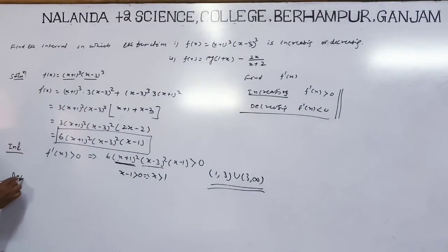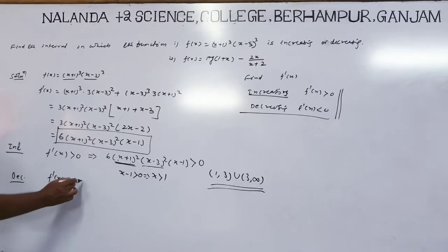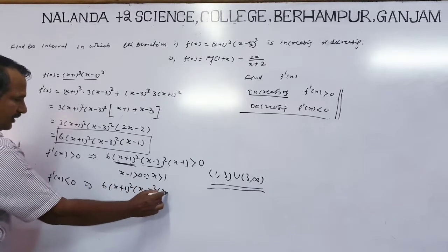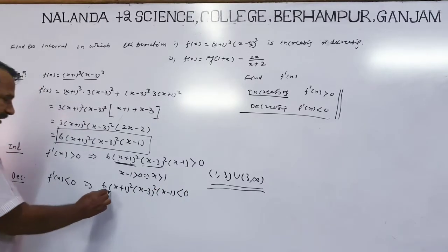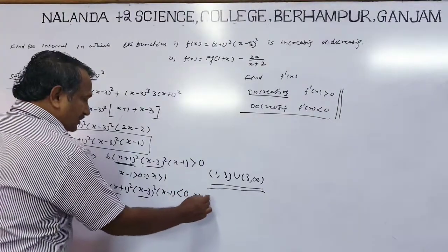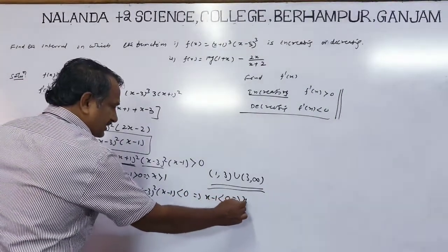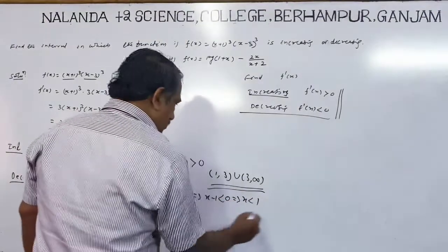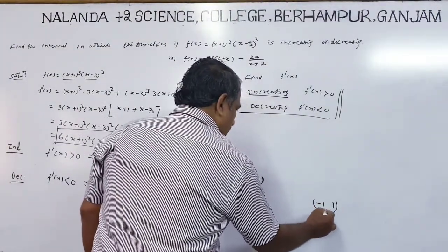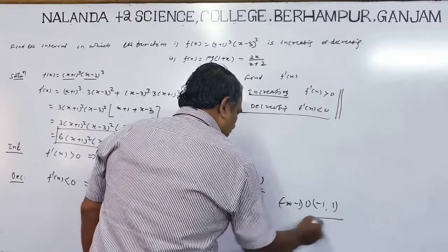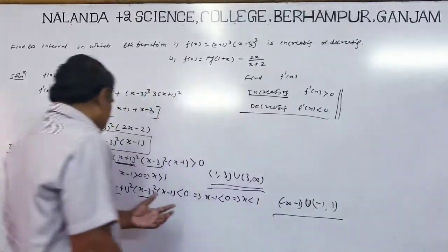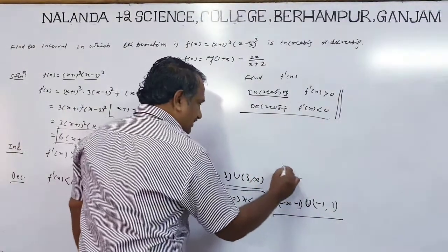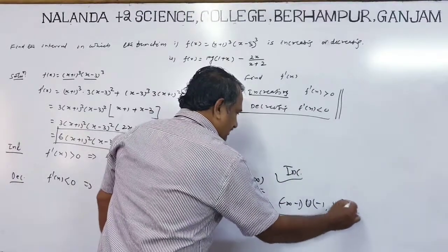For the decreasing case, f'(x) is less than 0. That means 6(x+1)²(x-3)²(x-1) is less than 0. The squared terms are positive, so x-1 must be less than 0, giving x less than 1. The decreasing interval is (-∞, -1) union (-1, 1), excluding x = -1. On this interval, the function is decreasing.